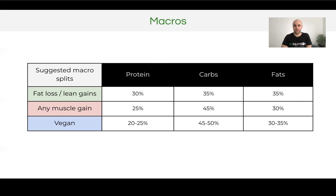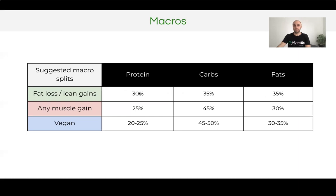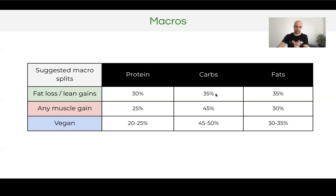Here are our suggested macro splits. For fat loss, I suggest starting at 30% protein, 35% carbs, and 35% fats. People can drop carbohydrates or fats depending on personal preference, but we find this gives you around 2 grams per kilo of body weight in protein. The even distribution of carbs and fats allows enough food volume from carbohydrates and a nice balance to your intake. That's our starting point.